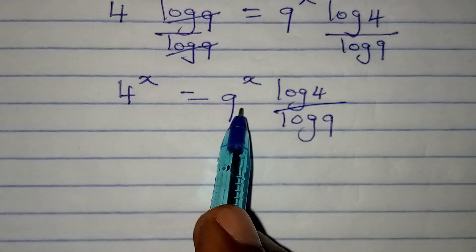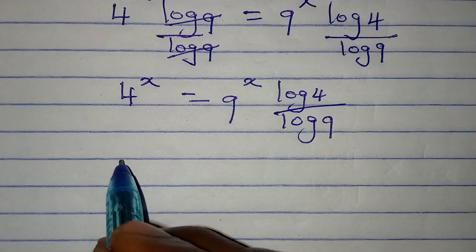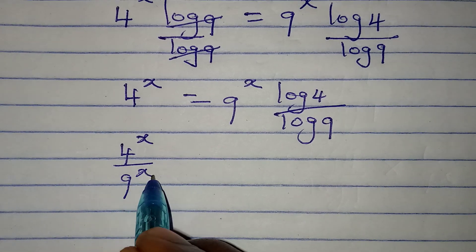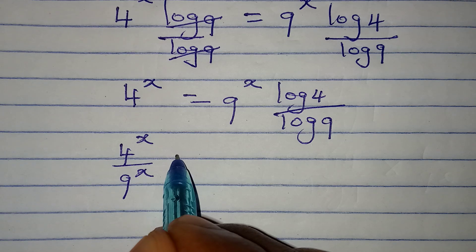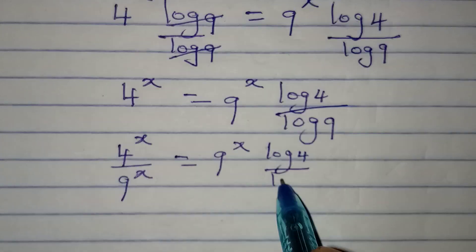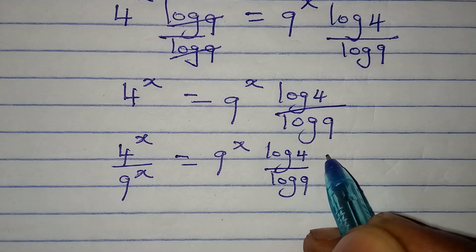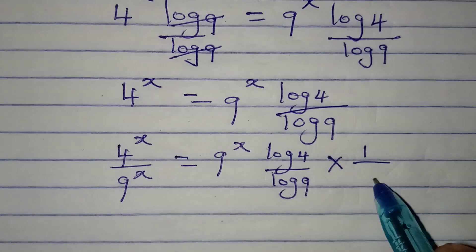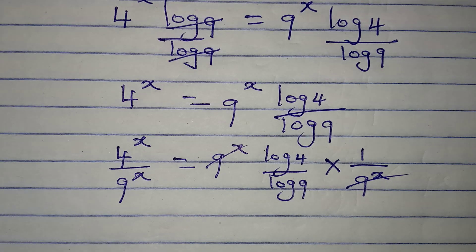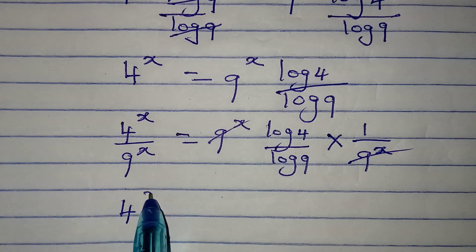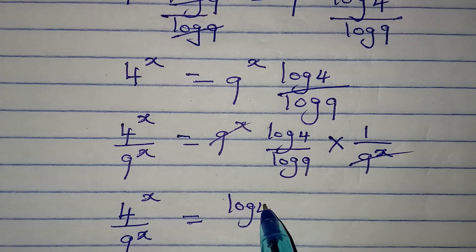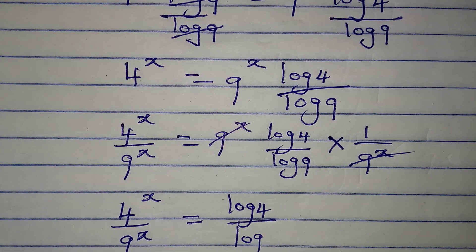The next thing I will do is divide both sides by 9 to the power of x. So from here I will have 4 to the power of x divided by 9 to the power of x, and this will equal log 4 over log 9, since 9 to the power of x cancels 9 to the power of x.